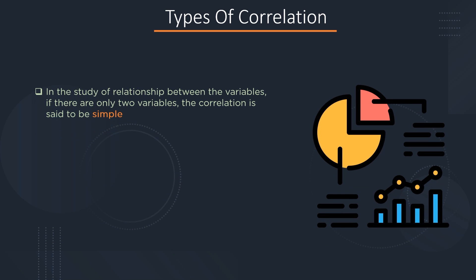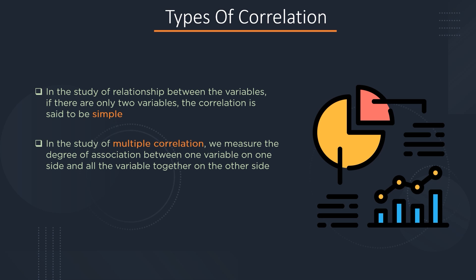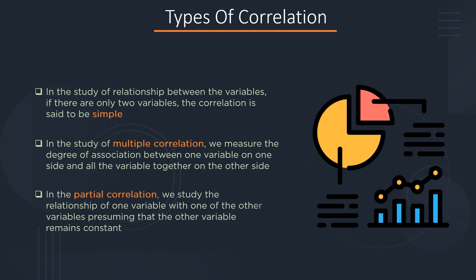Let's discuss simple, multiple, and partial correlation. When studying the relationship between variables and only two variables are involved, the correlation is said to be simple. In multiple correlation, we measure the degree of association between one variable on one side and all the other variables together on the other side. For partial correlation, we study the relationship of one variable with one of the other variables, presuming that all remaining variables stay constant.